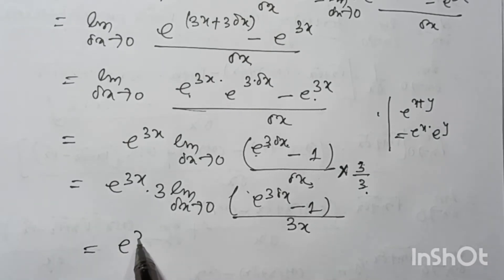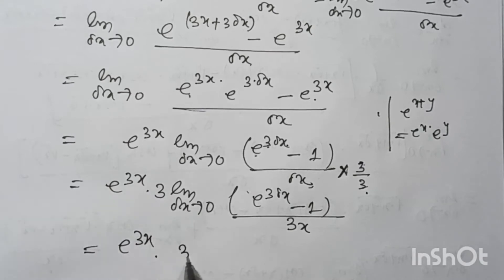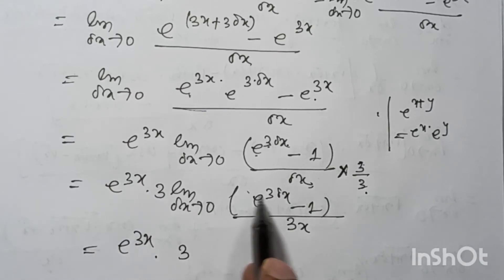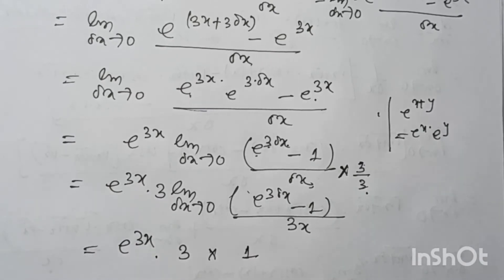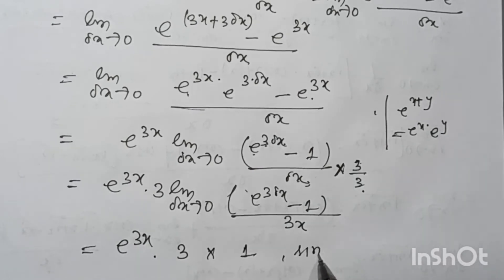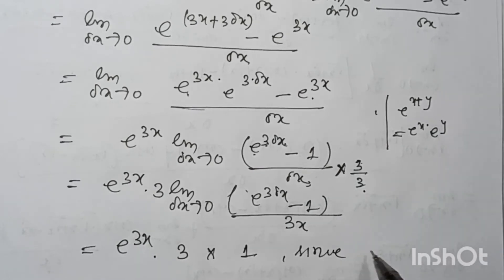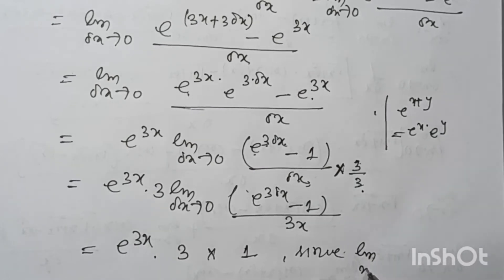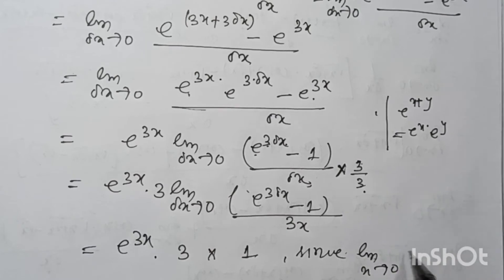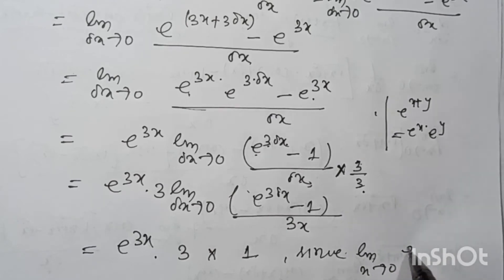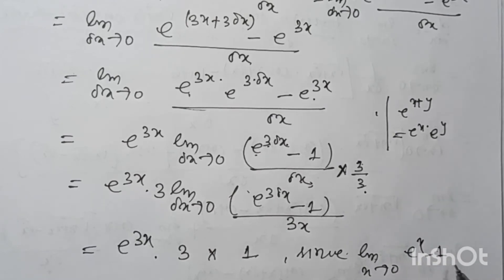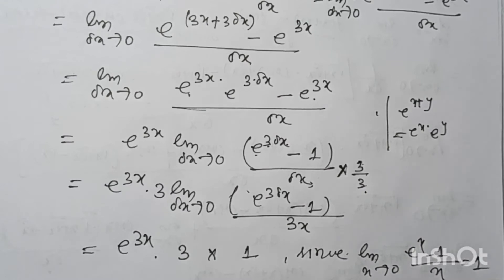As δx tends to 0, e to the power 3δx tends to 1. We apply the standard limit: limit as x tends to 0 of (e to the power x minus 1) divided by x is equal to 1. So the limit term equals 1.